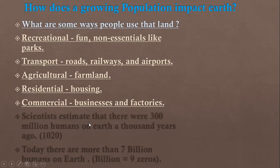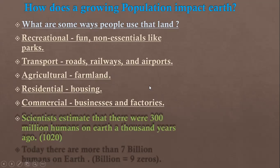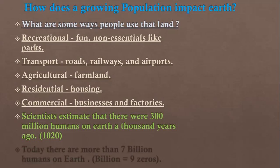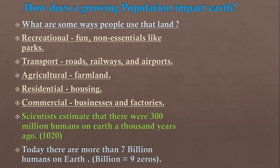Scientists estimate that there were 300 million humans on earth a thousand years ago. Nowadays, they estimate that the number of humans has reached 7 billion humans on earth. We know that billions equals nine zeros.